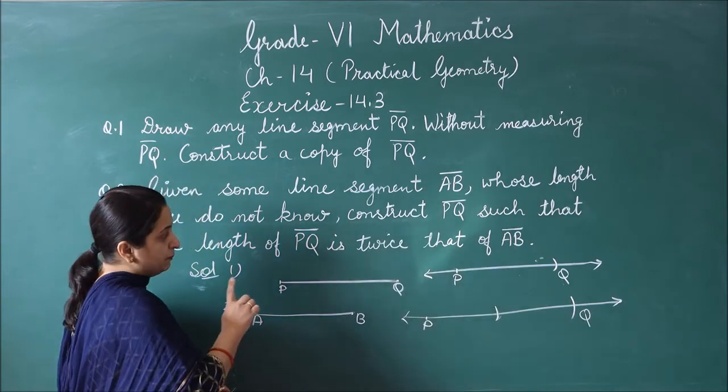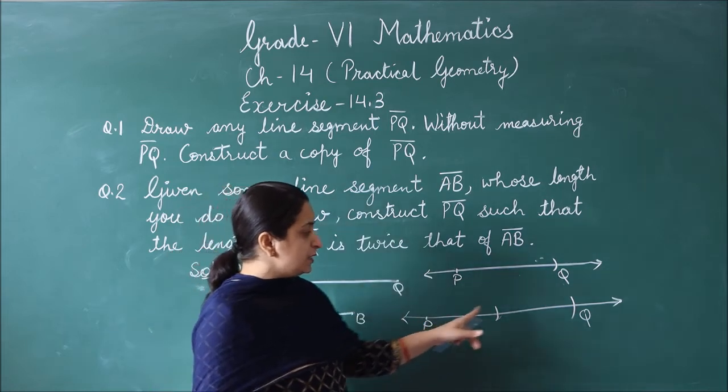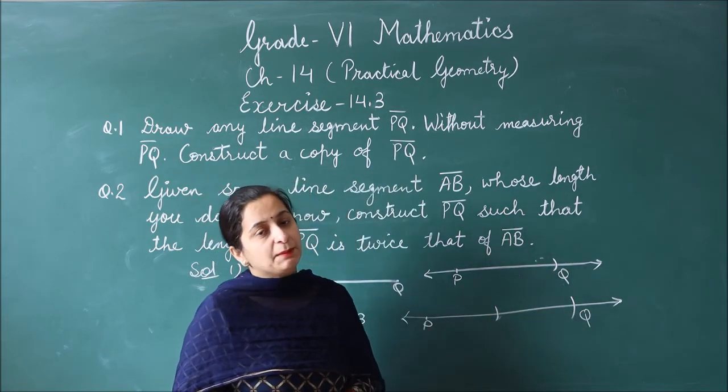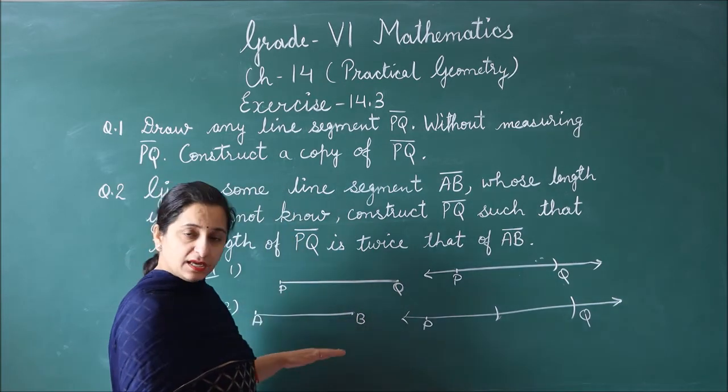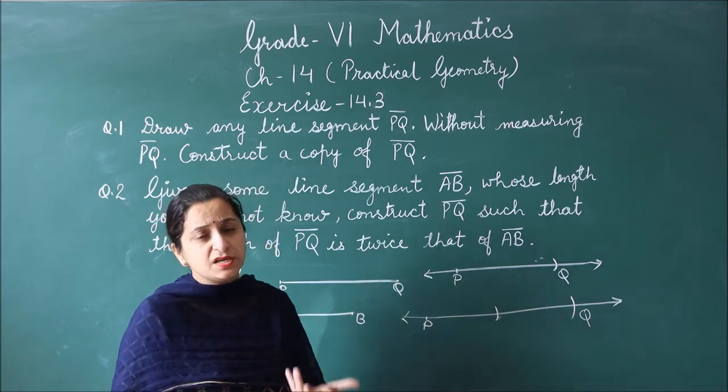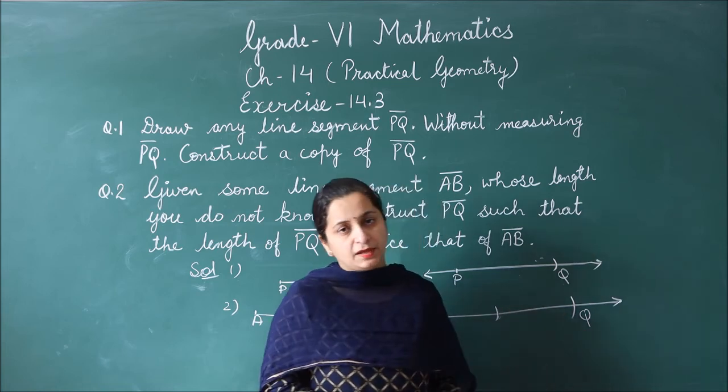If you measure it, you will know that from P to Q will be double. You can measure it to check if your construction is correct or not. Suppose AB is 3, then definitely PQ will be double. Clear?